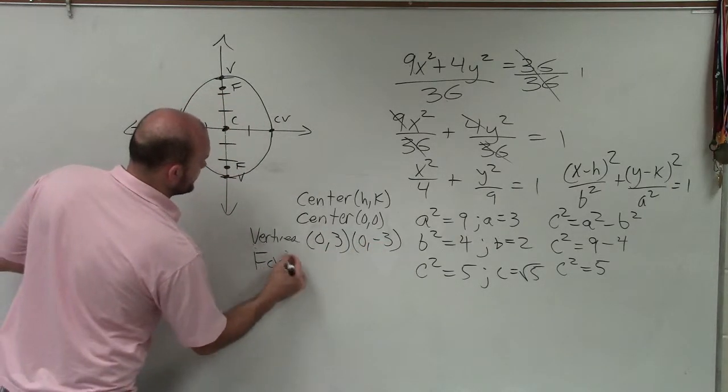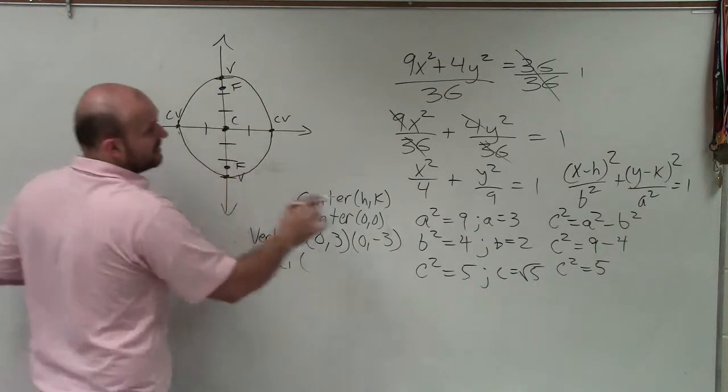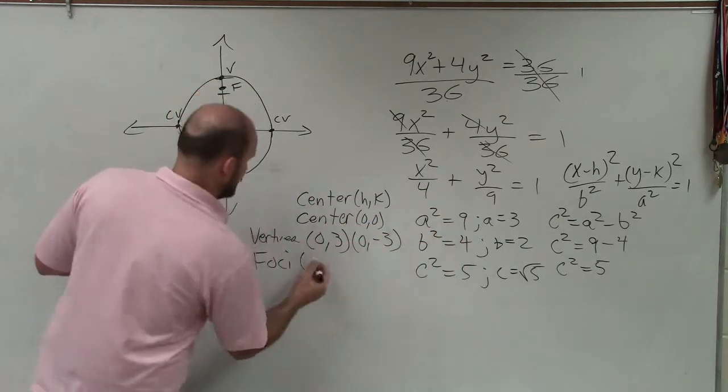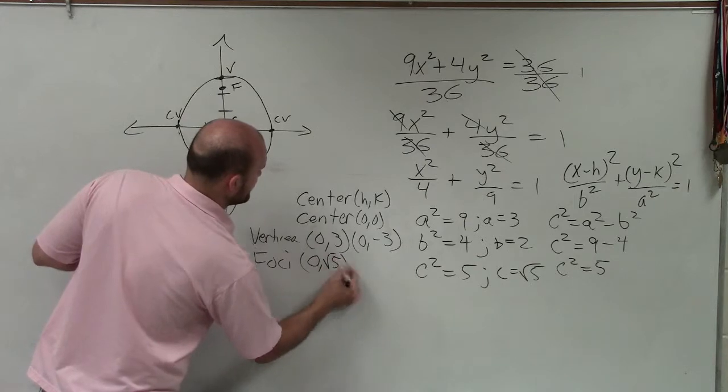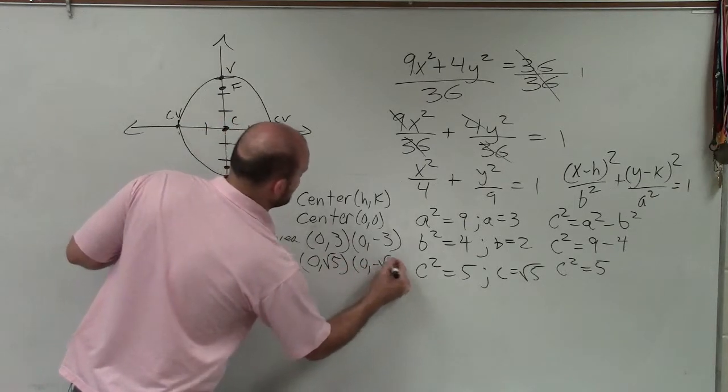For the foci, foci is square root of 5. So it's going to be 0, square root of 5, and 0, negative square root of 5.